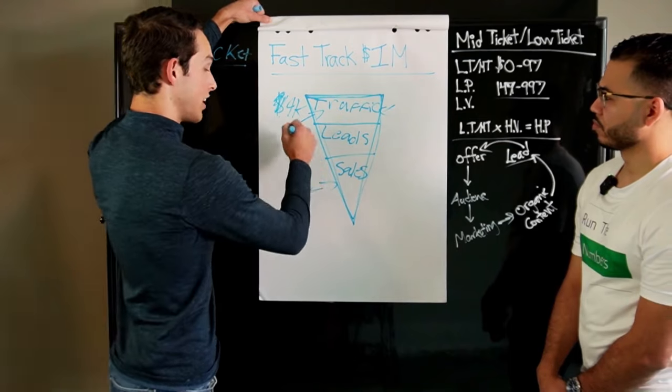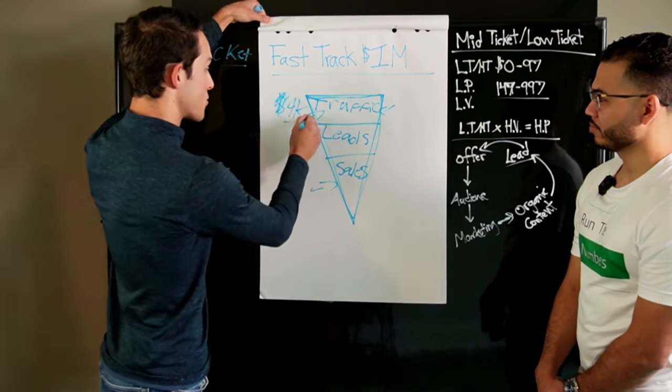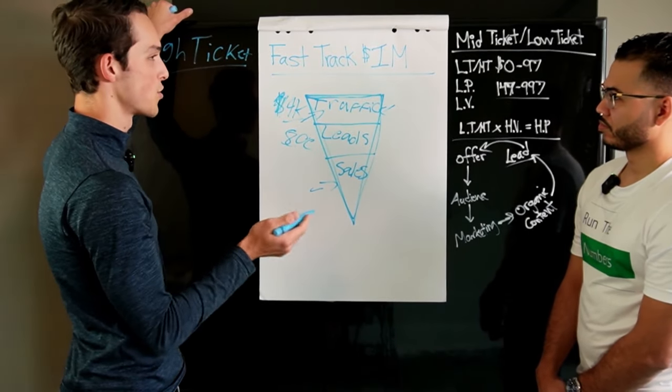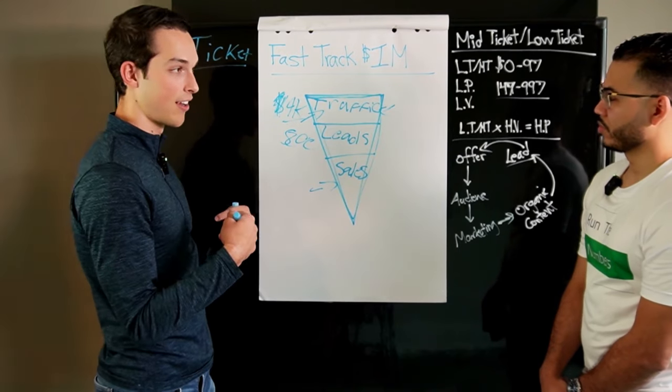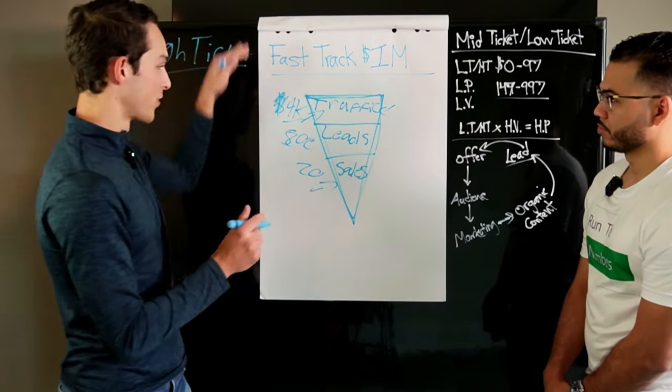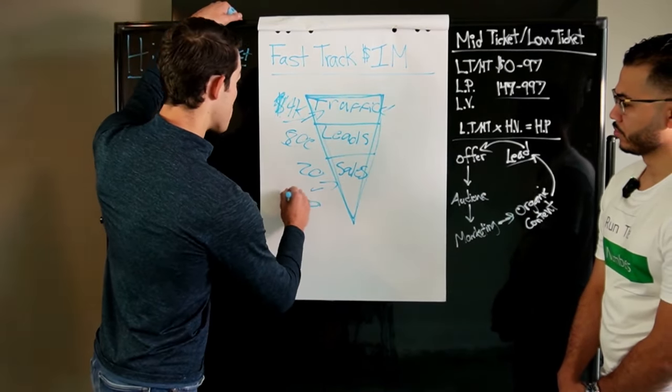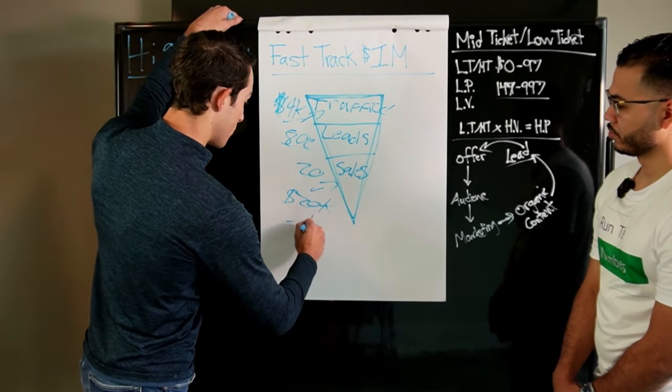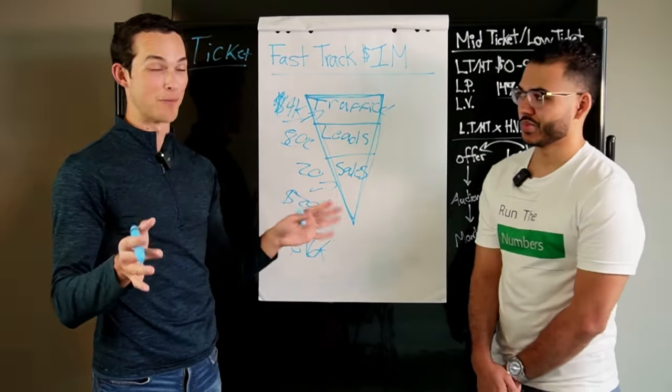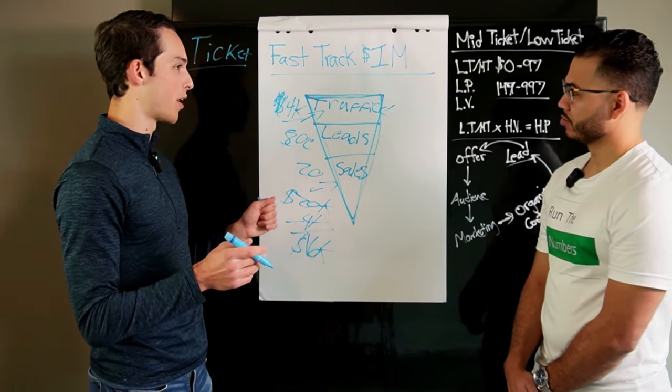$4,000 a month would get you maybe a dollar a click, maybe 4,000 visitors. Out of those 4,000 pieces of traffic, maybe you get 400 leads, maybe 10%. Out of 200 leads, maybe 10% of that, maybe 20 people. So 20 sales at a thousand dollars, that's 20 grand. You spent 4,000, you made 20 grand minus your ad spend, you're at 16K in profit.